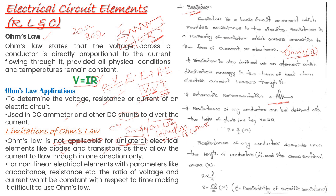The next limitation is non-linear electrical elements. Linearity simply means following Ohm's law, which means V must be directly proportional to I. Non-linearity means V and I do not have a proportionality relationship. So for non-linear circuits we cannot apply Ohm's law. These two are the major limitations of Ohm's law.